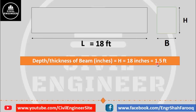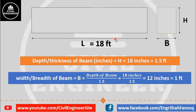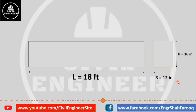The width of the beam equals depth divided by 1.5. The depth already selected is 18 inches divided by 1.5, which gives 12 inches, or 1 foot. So using this simple thumb rule, the dimensions obtained are: depth or thickness of the beam is 18 inches, and breadth or width of the beam is 12 inches.